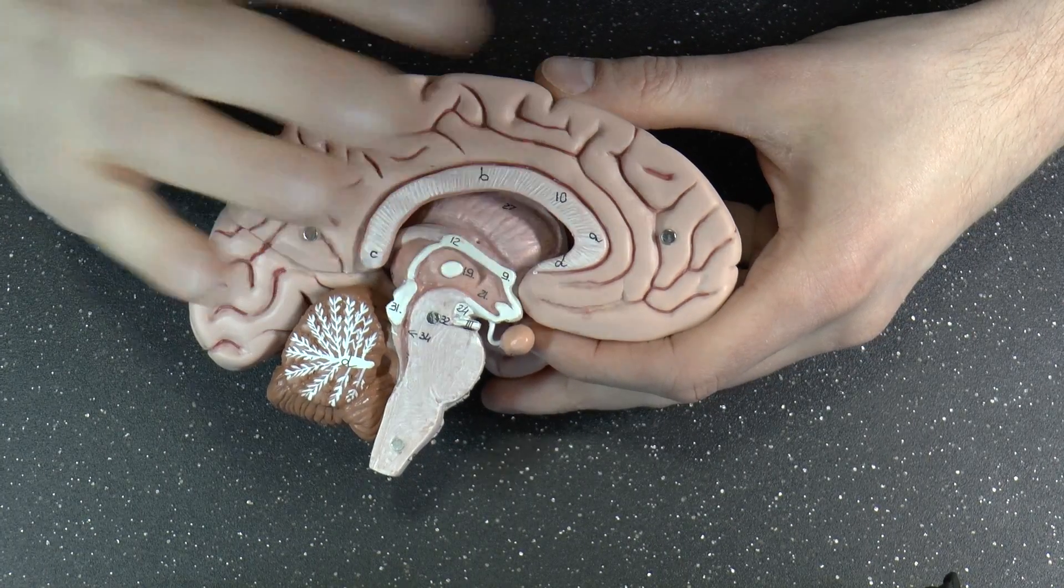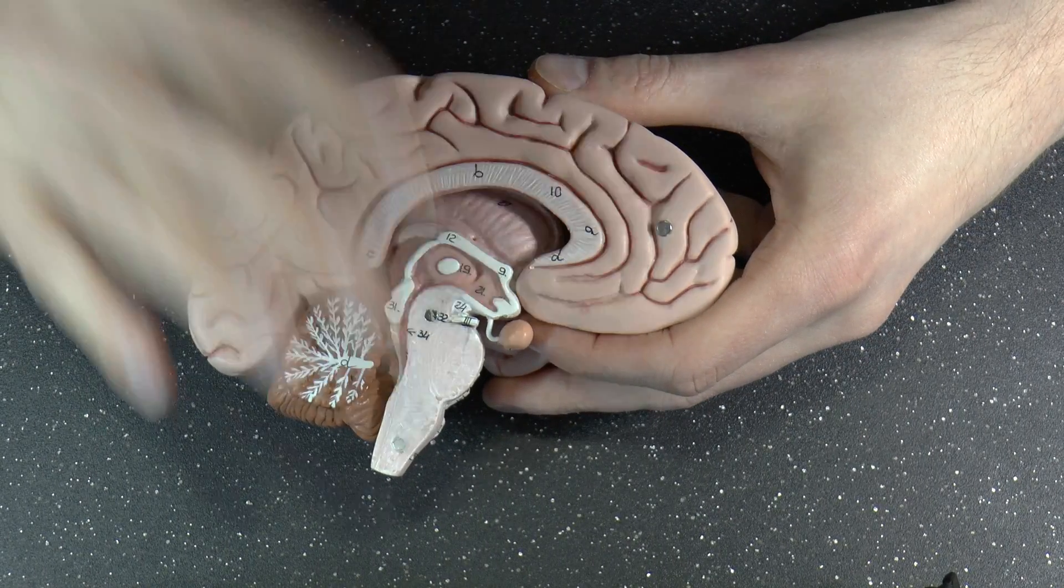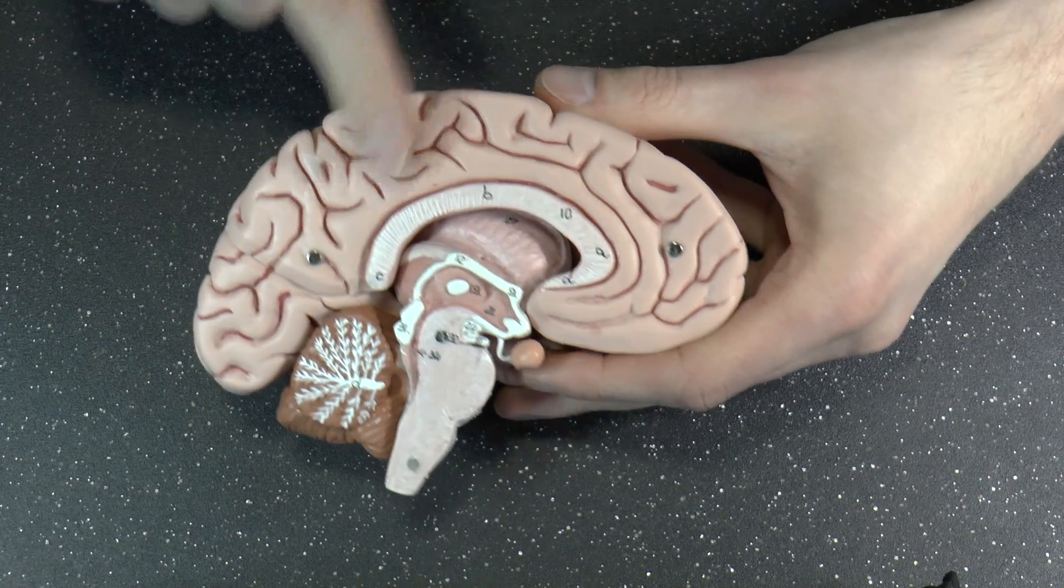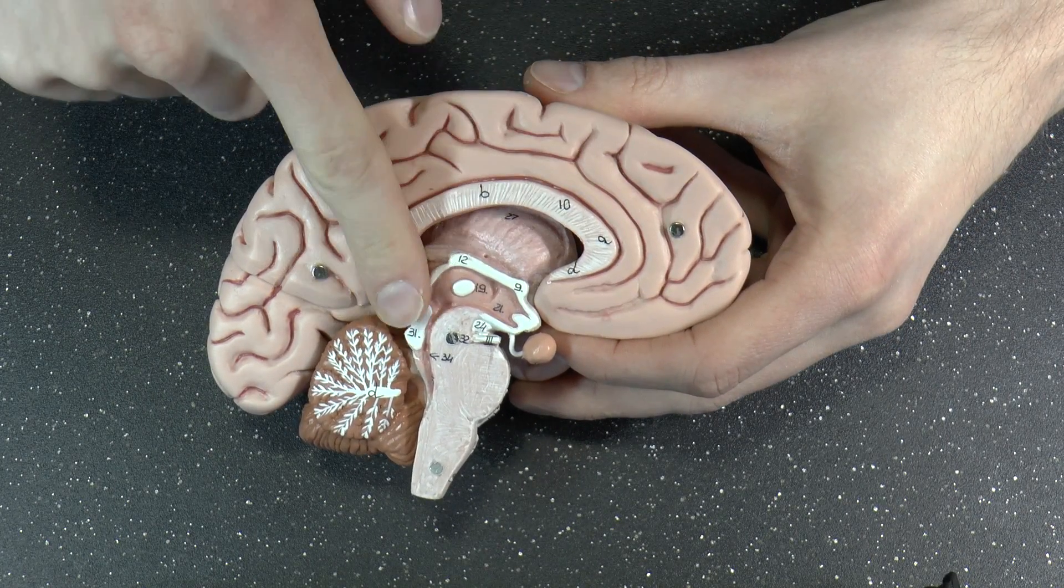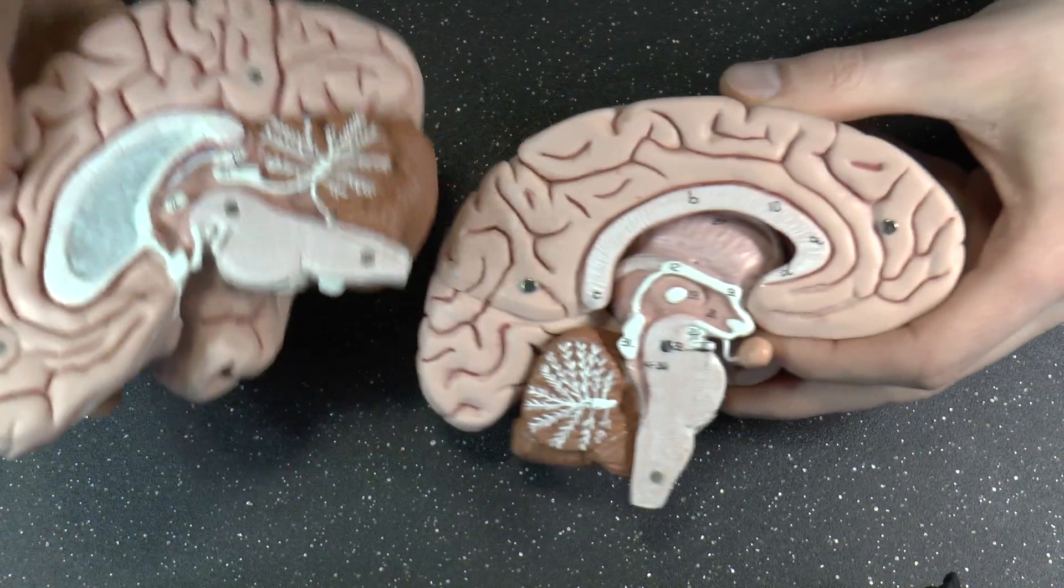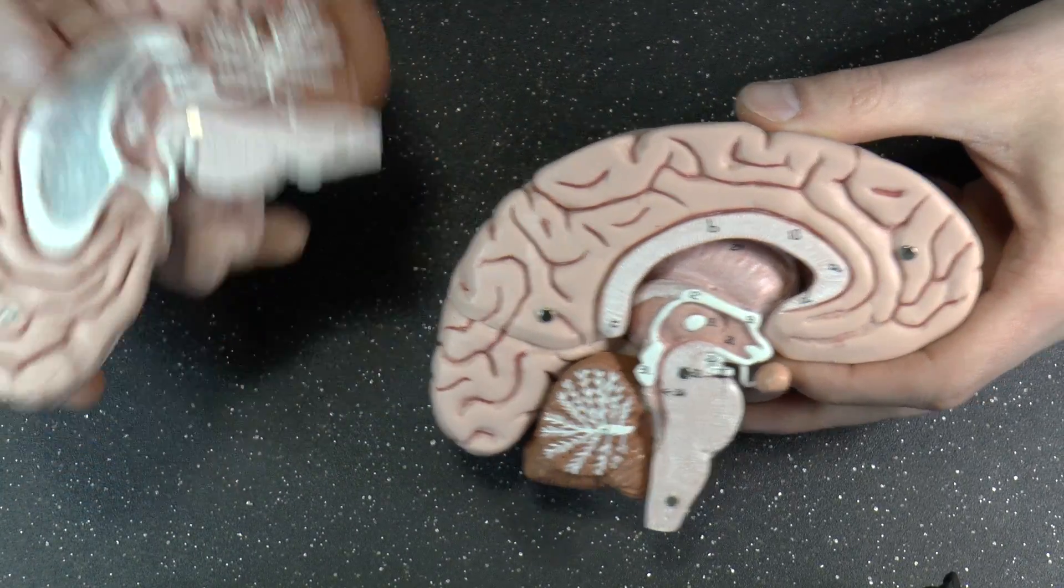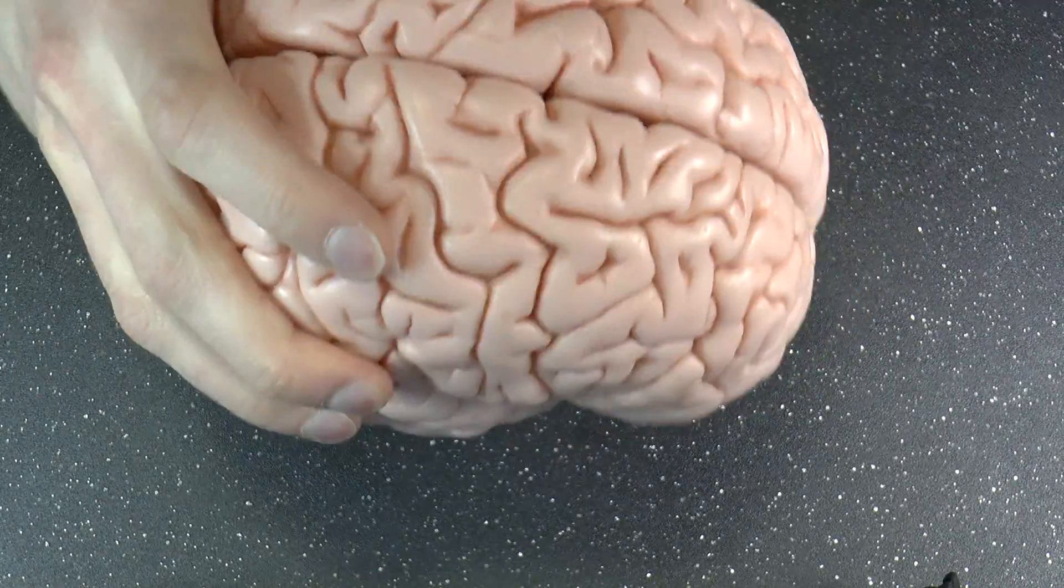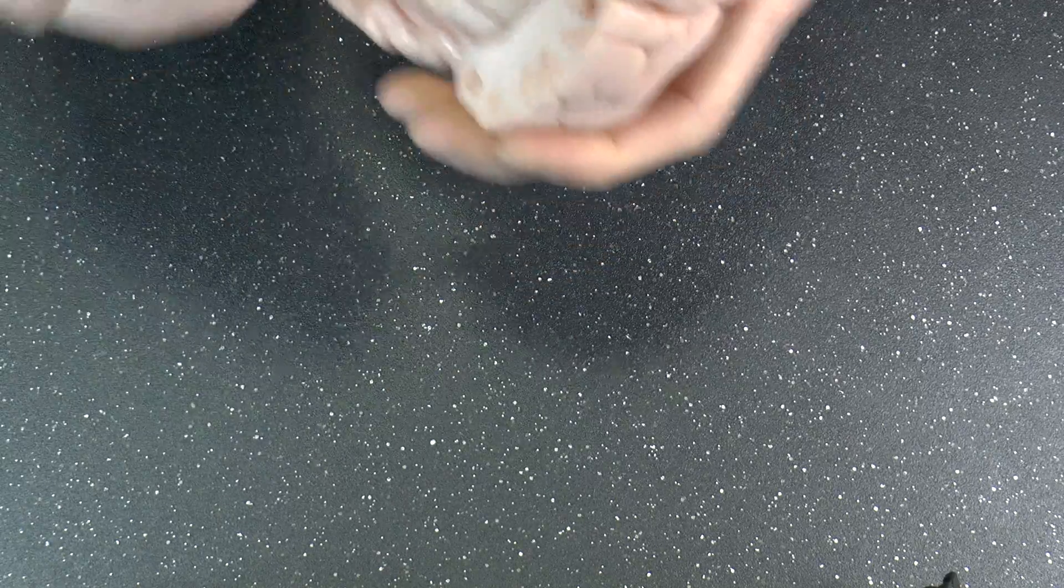Now, the problem, I always think, with seeing sagittal slices like this, is that this looks like a separate structure. Like you have one here, and then you look at the other half of the brain, and you have one there. But that's not how this works. So let me quickly show you another model.